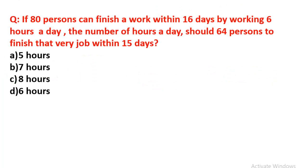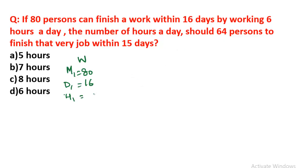Let's discuss the questions. The first question: If 80 persons can finish a work within 16 days by working 6 hours a day, find the number of hours per day that 64 persons should work to finish that same job within 15 days. So M1 = 80, D1 = 16, H1 = 6 hours.